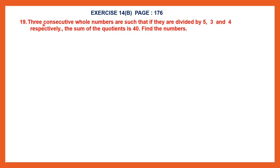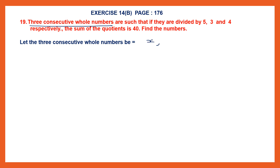Let's look at the first part: three consecutive whole numbers. Remember, consecutive means the numbers that come one after the other, and we're talking about whole numbers. So let the first number be x, the next number will be x plus 1, and the third number will be x plus 2.